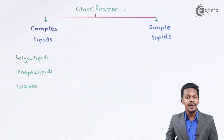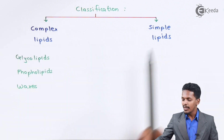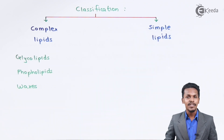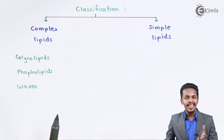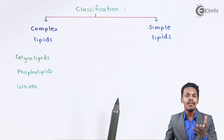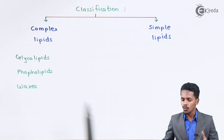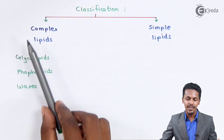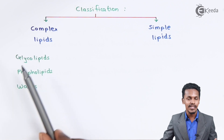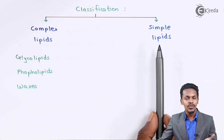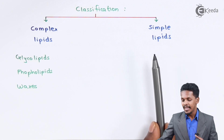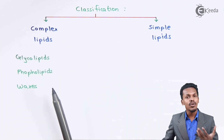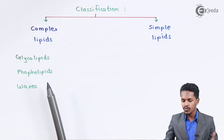Waxes are secreted by both plants and animals, and they also belong to the complex lipids. Now, simple lipids do not have an ester molecule or extra functional groups like complex lipids — they don't consist of any ester group, and that's why they don't get hydrolyzed very easily.